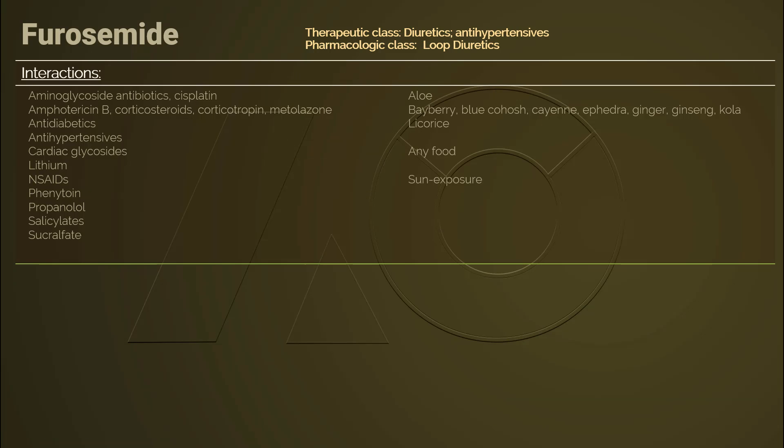Using furosemide with aminoglycoside antibiotics and cisplatin can increase the risk of ototoxicity. Corticosteroids, corticotropin, and metolazone can increase the risk of hypokalemia with furosemide. Furosemide can cause hyperglycemia, therefore it can decrease the hypoglycemic effect of antidiabetics. When used with antihypertensives, there will be an additive effect, lowering blood pressure even more.